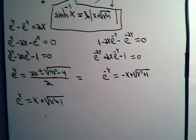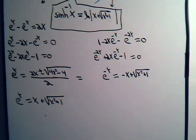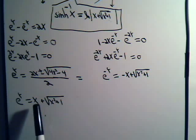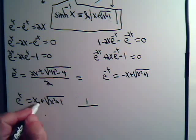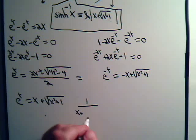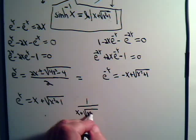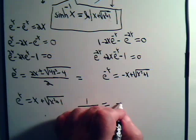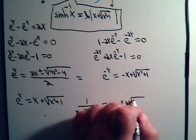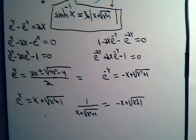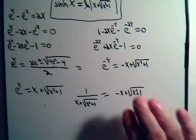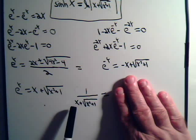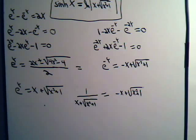What's interesting is comparing the two results: e to the y equals x plus the square root of x squared plus 1, and e to the minus y equals minus x plus the square root of x squared plus 1. Of course, e to the minus y is just the reciprocal of e to the y. So 1 over (x plus the square root of x squared plus 1) equals minus x plus the square root of x squared plus 1. This may not have seemed obvious initially.